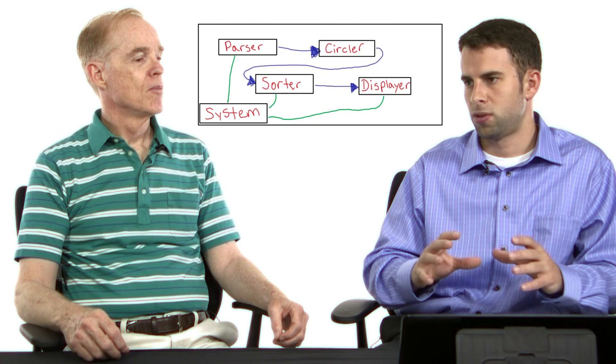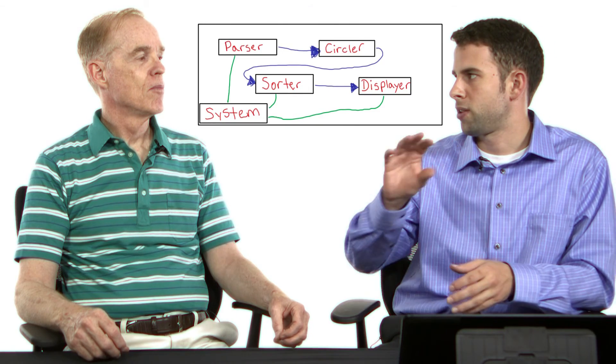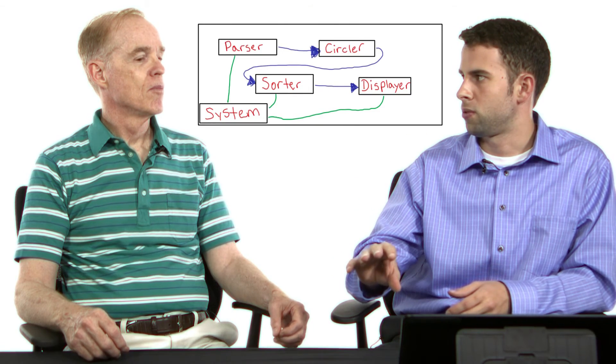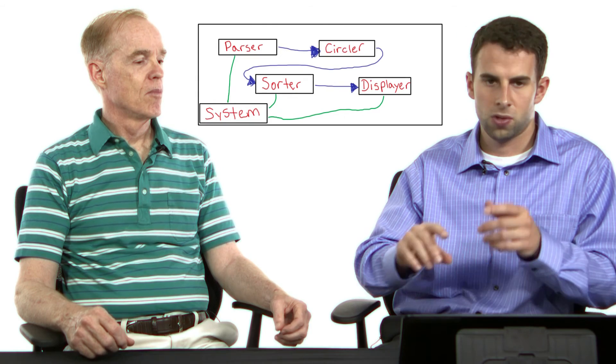So we start with the parser. The parser does its job and passes its output to the circler.